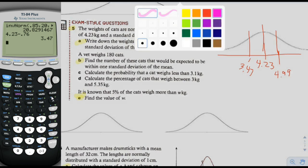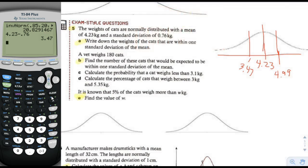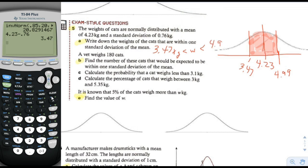Write down the weights of the cats that are within one standard deviation of the mean. So we're talking about one standard deviation to the left and one to the right. That's pretty easy — we just say 3.47 kilograms to 4.99 kilograms. They just want to know what region we're talking about.